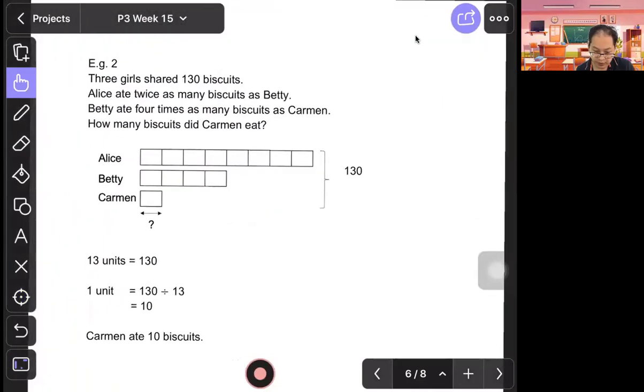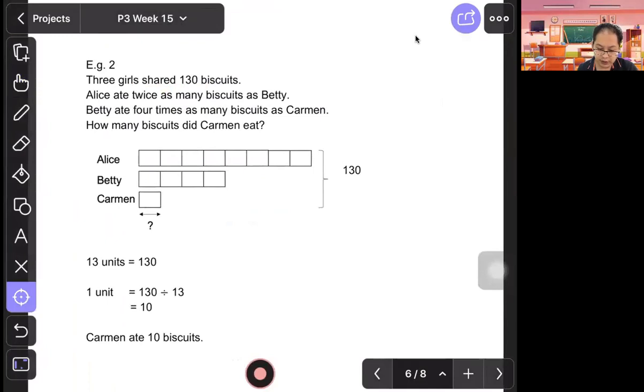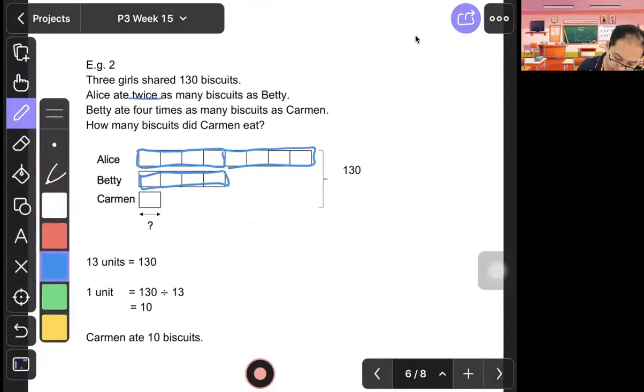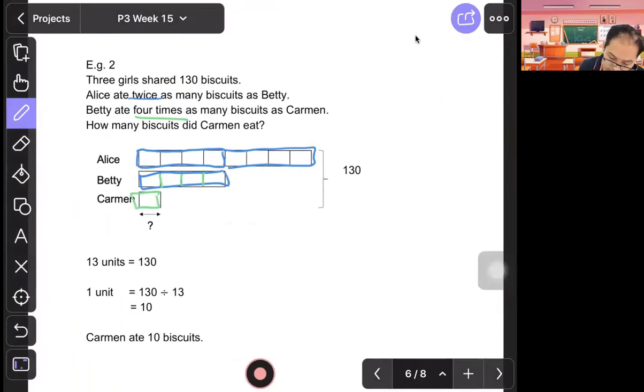Example 2: Three girls shared 130 biscuits. Alice had twice, two times of Betty. And Betty is four times of Carmen. So break into four. So Alice break into four here, break into four here. Total eight units. So 130 is for the three of them. So find Carmen. 130 is 13 units: 5, 4, 8, 12, 13. Then you divide by 13 to find one unit that's Carmen. Carmen ate 10 biscuits.